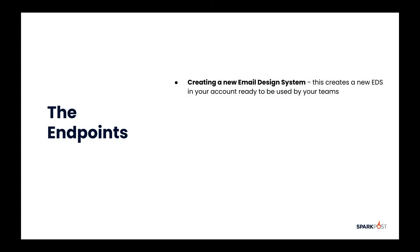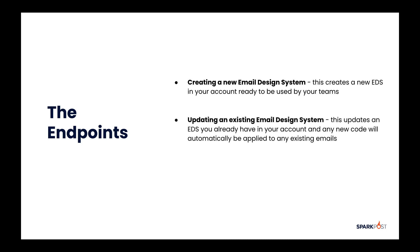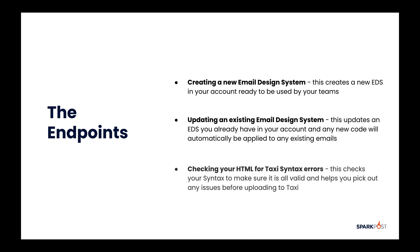There are three endpoints of the API. The first is creating a new Email Design System — this creates a new EDS in your account, ready to be used by your teams. The second is updating an existing Email Design System — this updates an EDS you already have in your account, and any new code will automatically be applied to any existing emails.